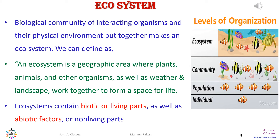An ecosystem contains both biotic and abiotic factors. The figure tries to explain the same: at the bottom is the individual; many individuals form the population; such populations that interact with each other form the community; and the communities along with the abiotic factors form the ecosystem.